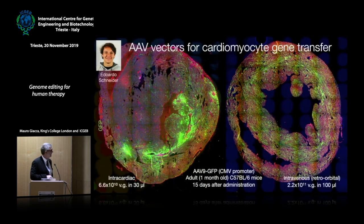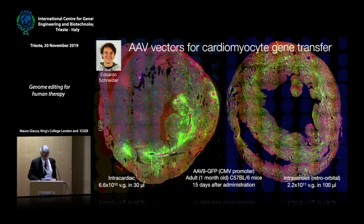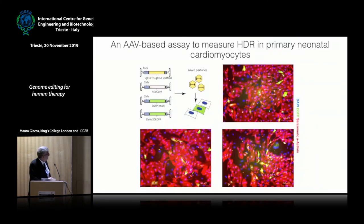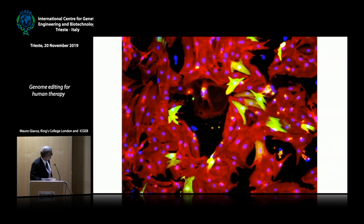We know we can use AAV vectors to go into the heart — we can inject them directly into the ventricular wall or systemically through the venous and arterial circulation to reach the heart more homogeneously. We tested a cocktail of four AAV vectors for homologous recombination in cultured cardiomyocytes: one vector carries the guide RNA, another carries the standard Streptococcus pyogenes Cas9, a third carries the mutated GFP, and a fourth carries the correction template. We gave this cocktail to cardiomyocytes and started seeing recombination — you can see the green cardiomyocytes in which recombination has occurred.